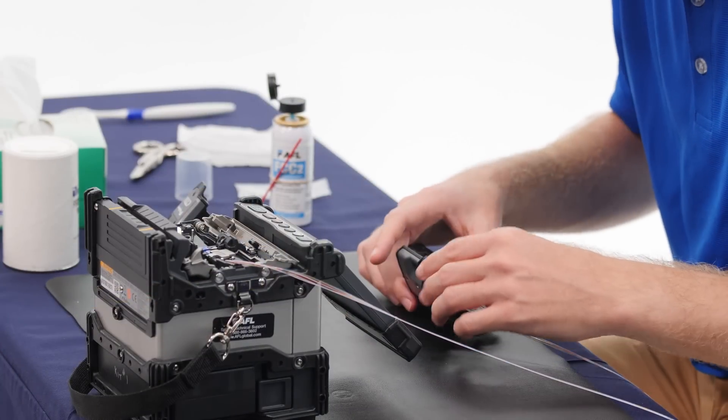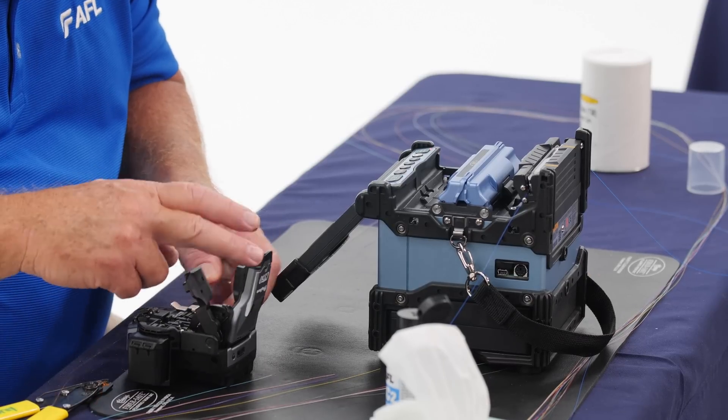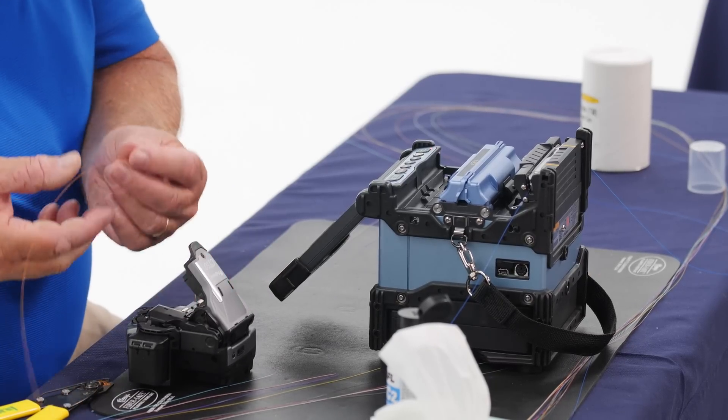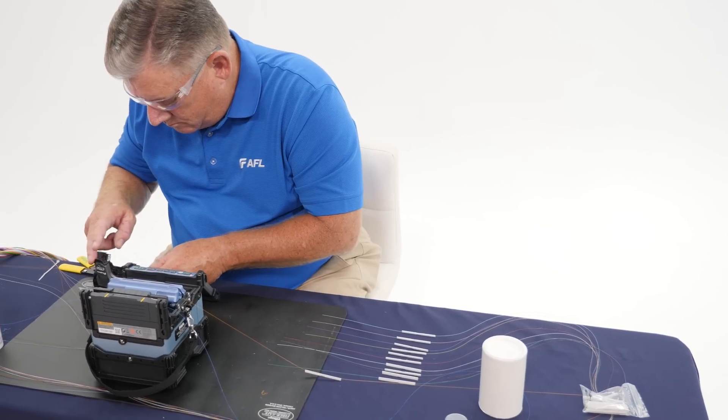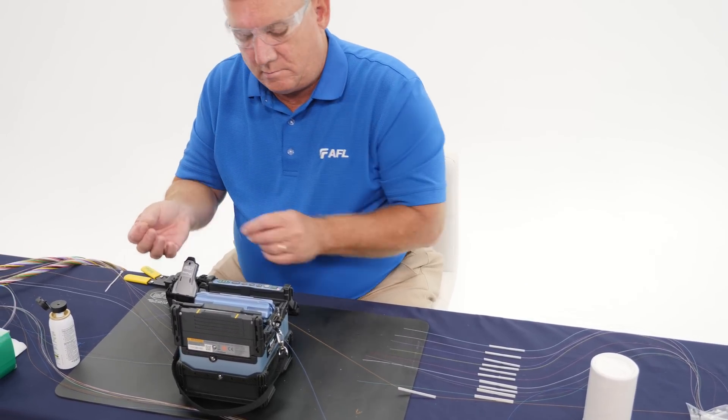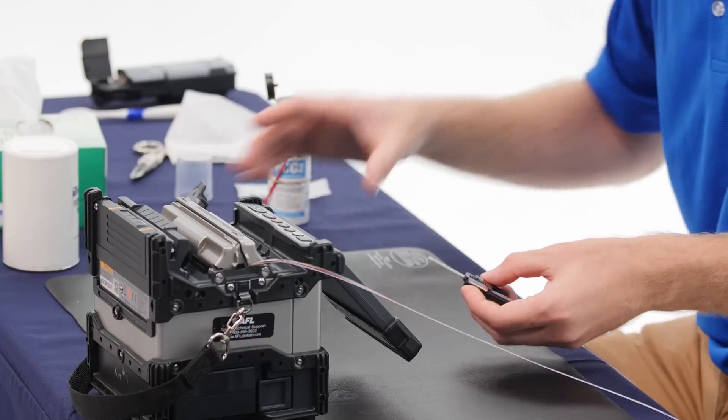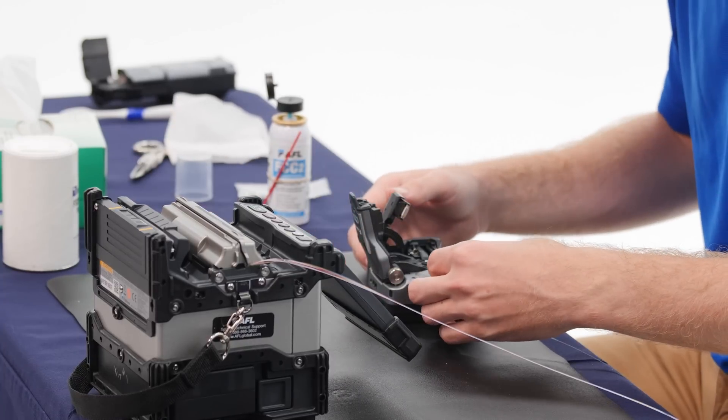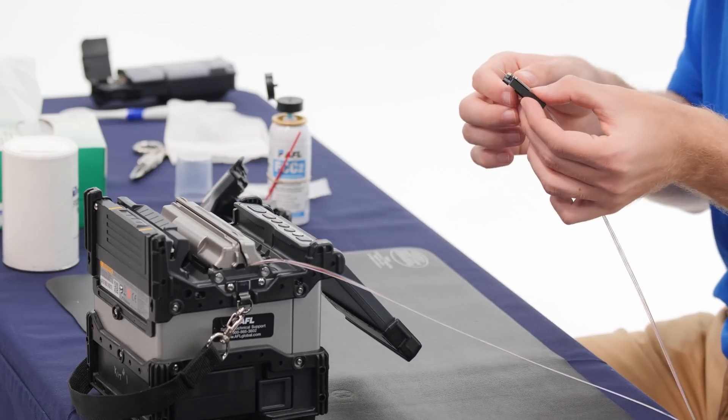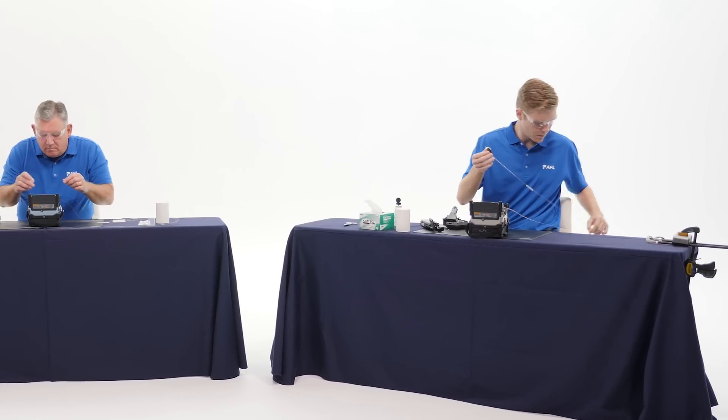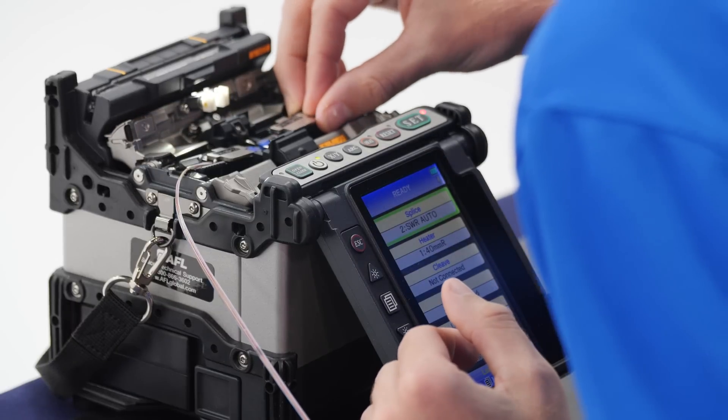Rob is loading his second spider web ribbon into the thermal stripper. It will take a few seconds to remove that. But Pat is like a machine. You can see how quickly he's moving through the process. He already has the third fiber set and ready to go. And he'll be loading it into the splicer shortly and pushing the button and making the splice. Rob is still working on completing his first splice setup. He's now putting his second spider web ribbon into the precision cleaver. Now he has his second spider web ribbon cleaved and ready to go. He will be loading that into the splicer momentarily.